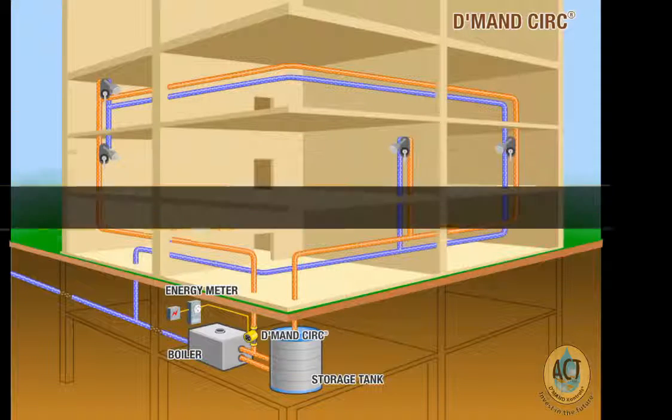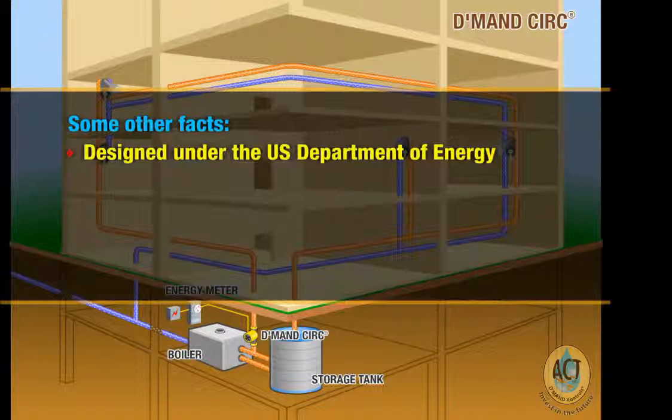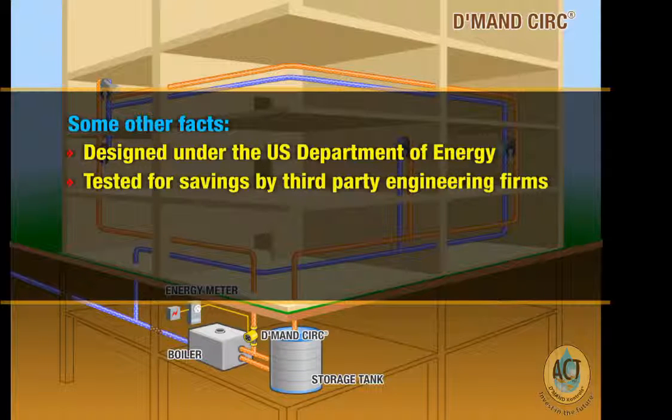Demand electronics was created by the Department of Energy's Inventions and Innovations program. The Demand CIRC has been tested for energy savings by multiple third-party engineering teams, including Heshong Mahone Group, funded by the California Energy Commission and by the Southern California Gas Company engineering staff.